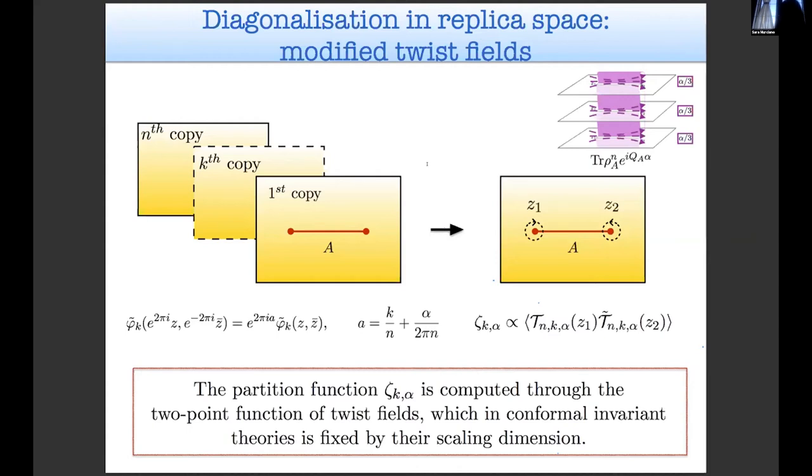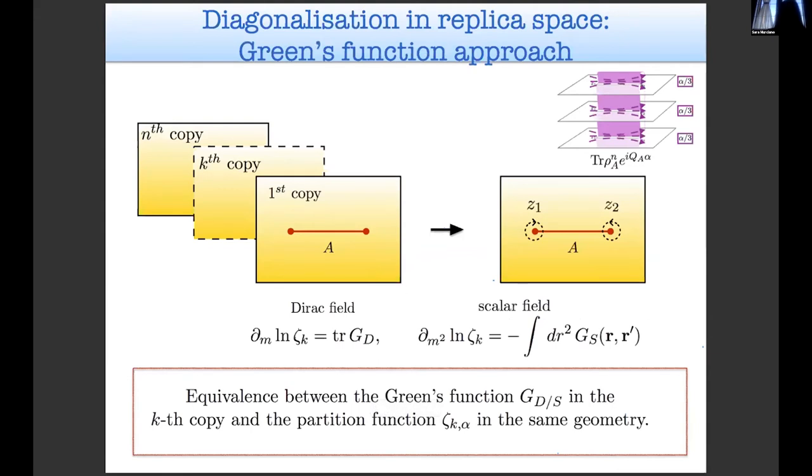We can collect the n components of the field in one single vector field with n components. We can write down the transformation matrix for the field across the different replicas and once we diagonalize these transformation matrix we end up into n decoupled fields, what I've called here phi tilda, whose boundary condition around the entangling point depends on the k-th replica and on the presence of this phase alpha. The two-point correlation function of the twist field will allow us to compute the partition function on the plane. The twist field can be written as the product of n independent twist fields, so the total partition function is given by the product of n independent partition functions.